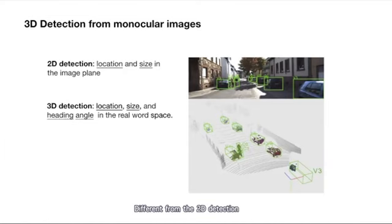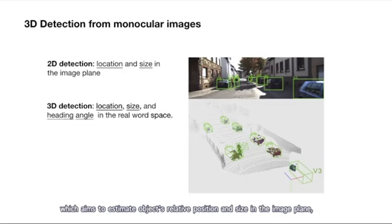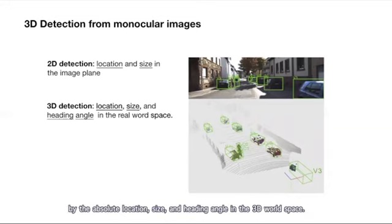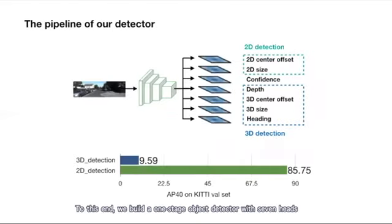Different from 2D object detection, which aims to estimate objects' relative positions and size in the image plane, our task tries to describe the objects by their absolute locations, size, and heading angles in the 3D workspace. To this end, we build a one stage object detector with seven heads to predict the required items for both 2D detection and 3D detection.